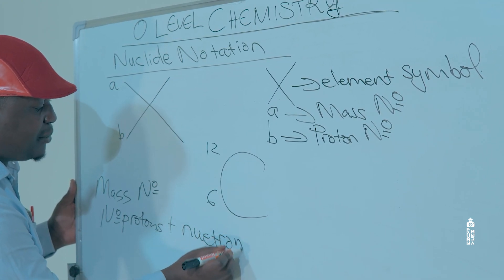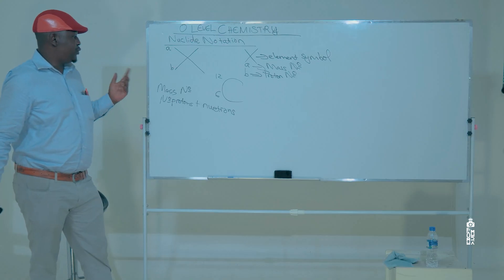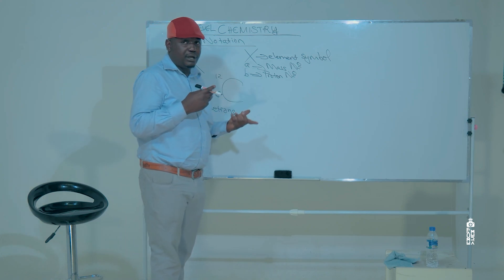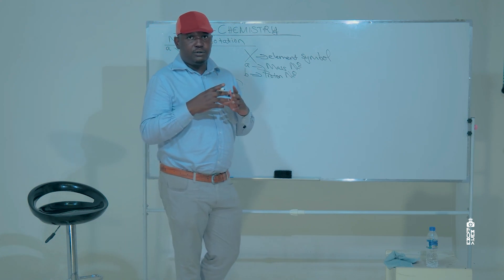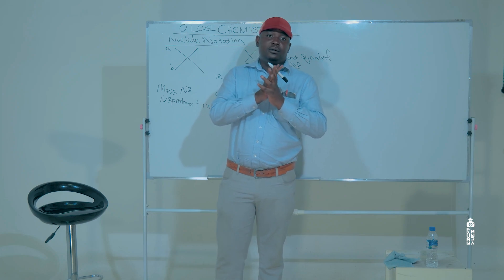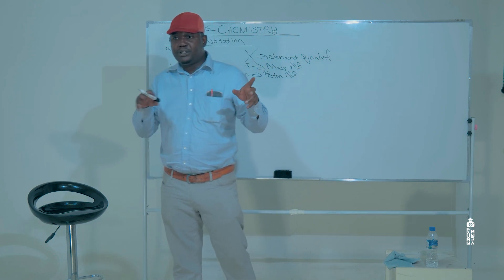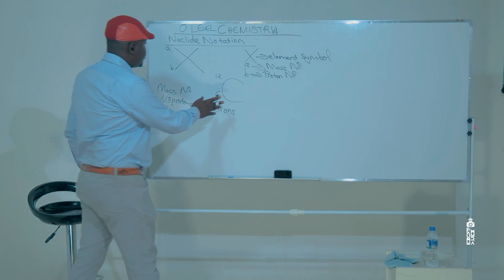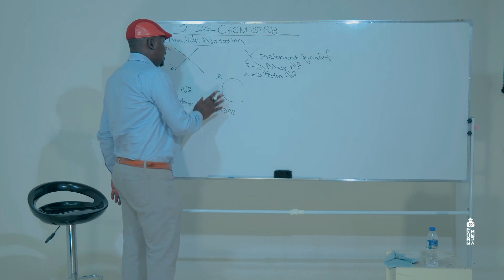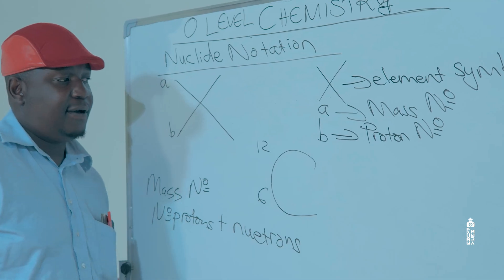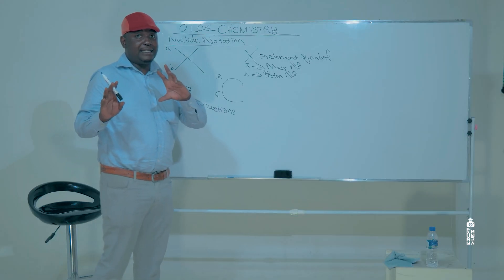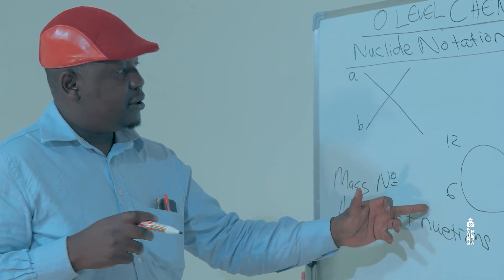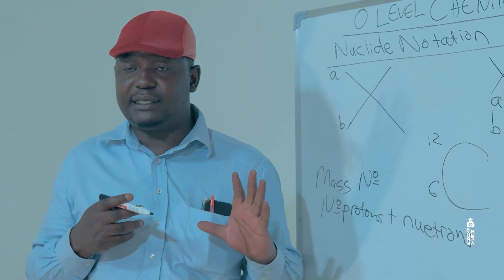Remember, an atom has got three subatomic particles, which are protons, neutrons, and electrons. Protons and neutrons reside in the nucleus of an atom, and electrons reside in the orbits or the shells. So what it means here is that carbon has got a mass number of 12 and a proton number of 6. So if we are to find the number of neutrons of carbon, we subtract 12 minus 6 and we get 6.